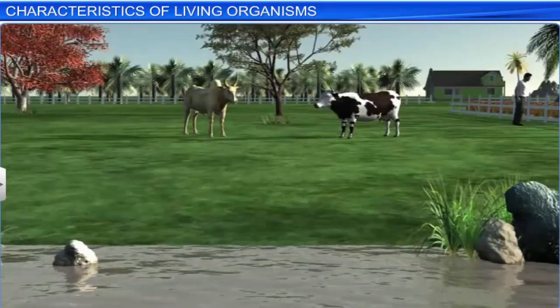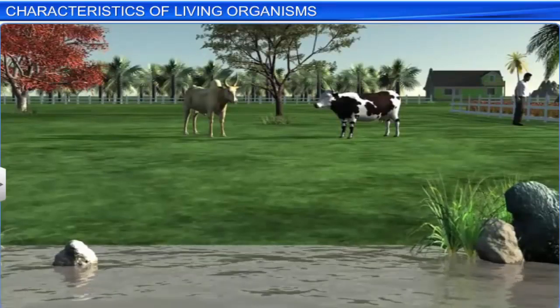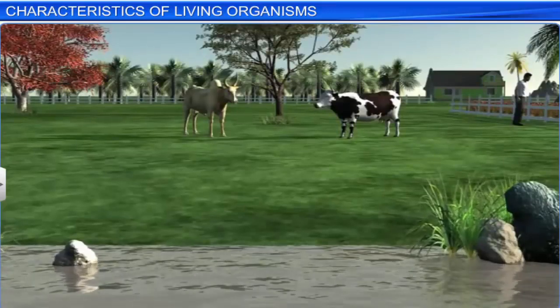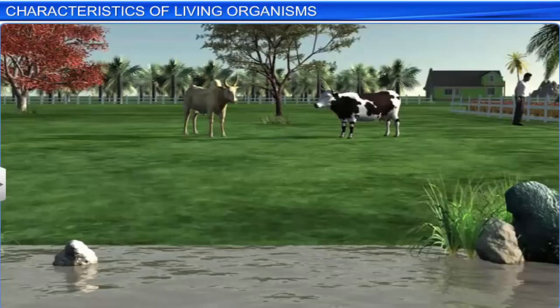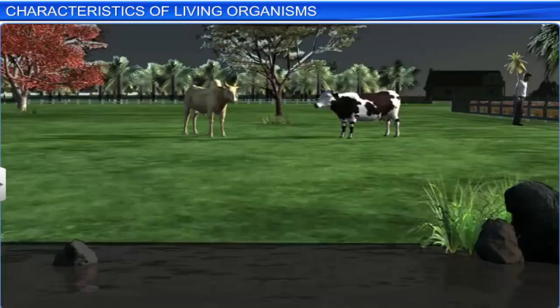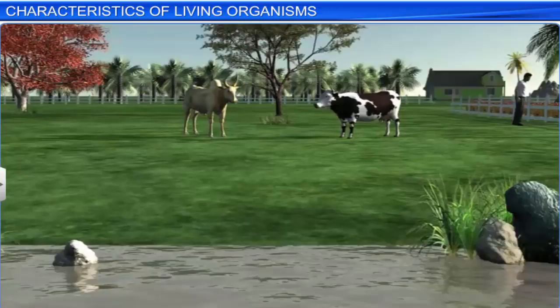The world consists of both the living and the non-living, but how do we segregate the two? We can do so by looking out for certain characteristics associated with living organisms. However, these characteristics can be definitive or non-definitive.